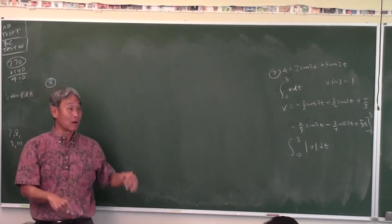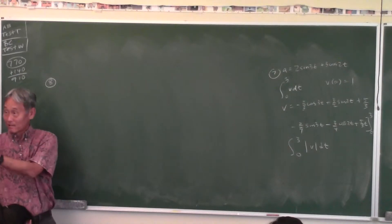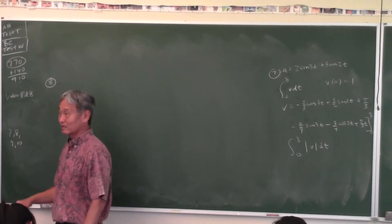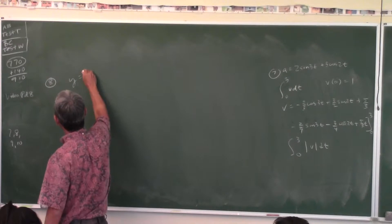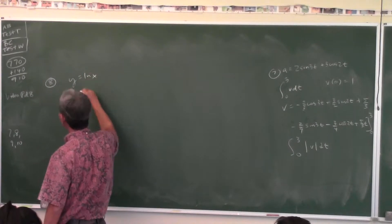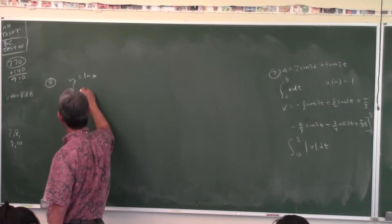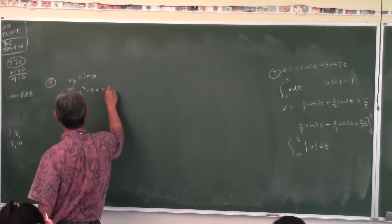Pay attention to this problem — this problem is on the test. I put that on my AB test. y equals natural log x. y equals x squared minus 4x plus 3.